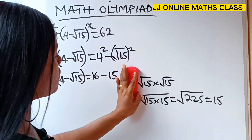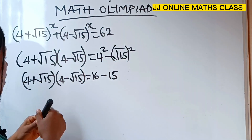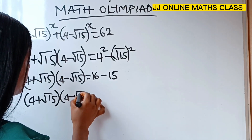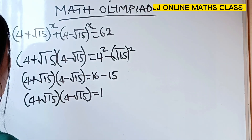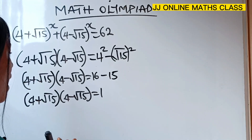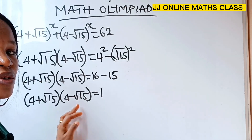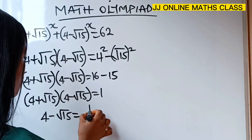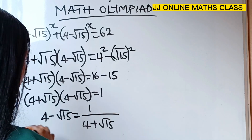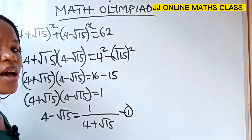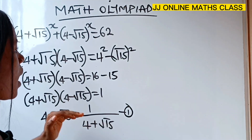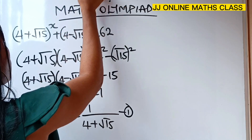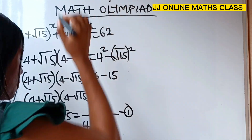Root 15 squared gives us 15. That means we can write that 4 plus root 15 into 4 minus root 15 is equal to 1. That means if I make 4 minus root 15 the subject of the formula, I can say that 4 minus root 15 is equal to 1 over 4 plus root 15.